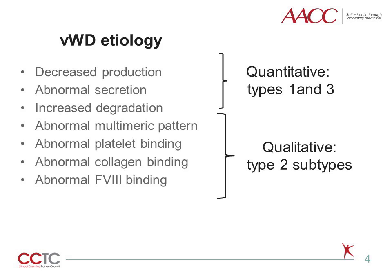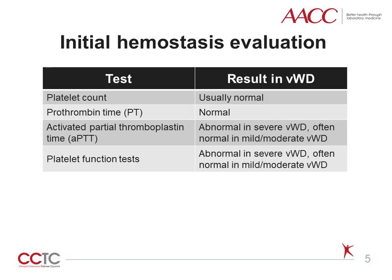For instance, forms with abnormal platelet binding have mutations in gene regions that code for platelet binding, such as exon 28. An initial hemostasis evaluation in a patient with a suspected bleeding disorder typically includes platelet count, prothrombin time, activated partial thromboplastin time, and often fibrinogen.